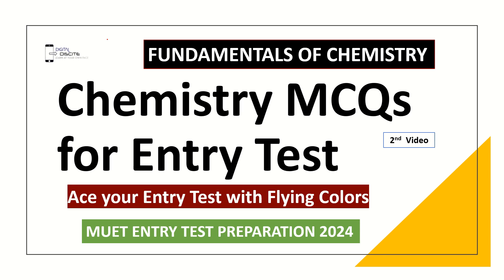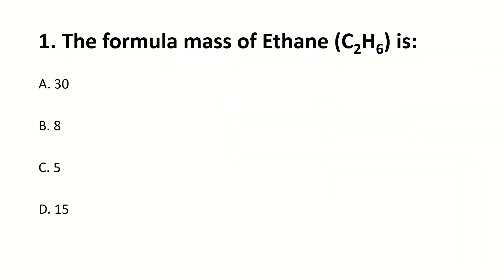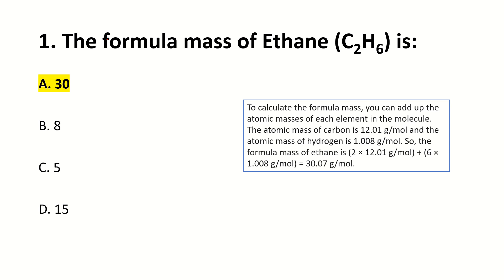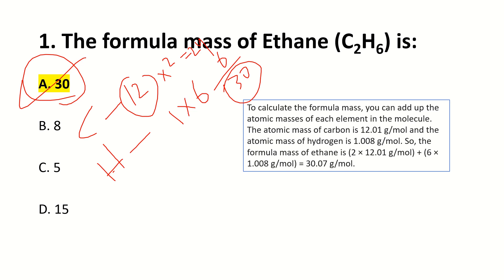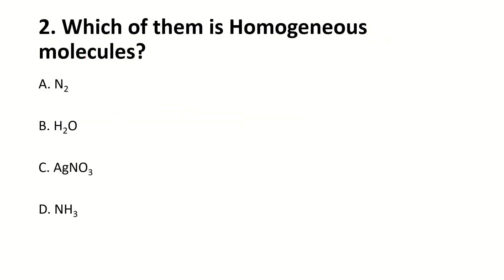The formula mass of ethane C2H6 is dash. The right answer is A: 30. Carbon has atomic mass 12, and there are 2 carbons, giving 24. Hydrogen has atomic mass 1, and there are 6 hydrogens, giving 6. So 24 plus 6 equals 30.